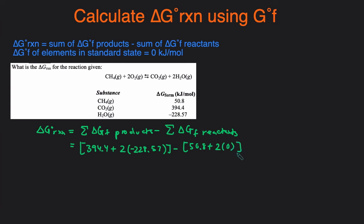Now we can plug into the calculator: negative 394.4 plus two times negative 228.57 minus negative 50.8, and we'll get negative 813.5, and the units will be kilojoules per mole.